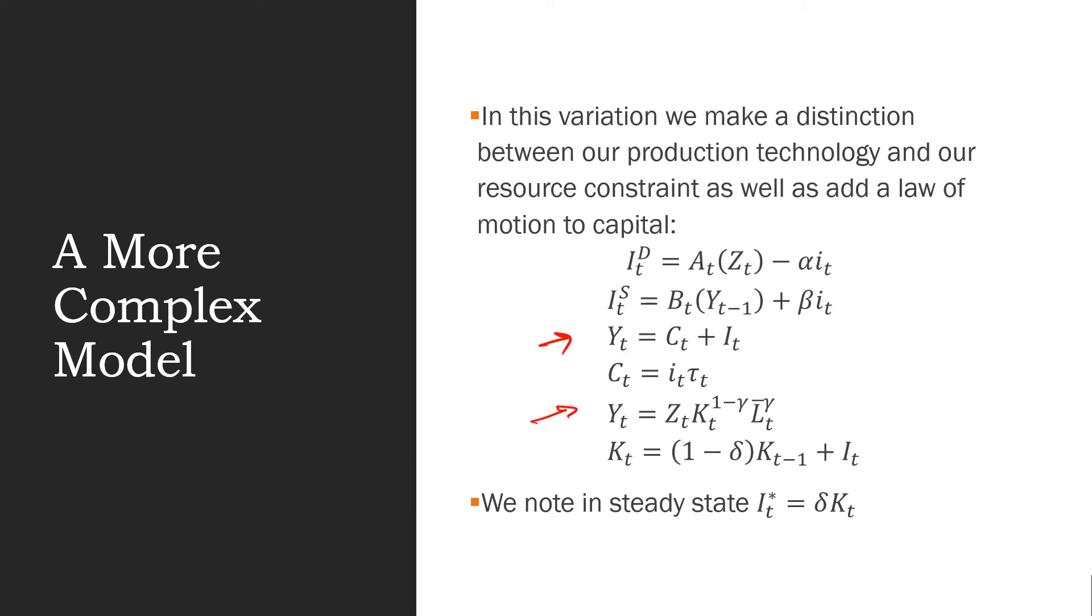And we also add a law of motion of capital right over here. This is the system, and we note that in steady state, this is where our equilibrium investment is going to be equal to delta Kt star, which is going to be our optimal Kt value.